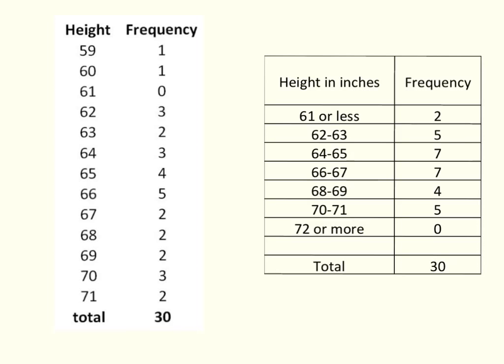To make sure it's clear, we've taken this lowest height bin, 61 or less, which contains all the observations here. You just take the 61, 60, 59, so that's two observations collapsed into here. For 62 and 63, we just go over here and look, 62 and 63, we've got 5.